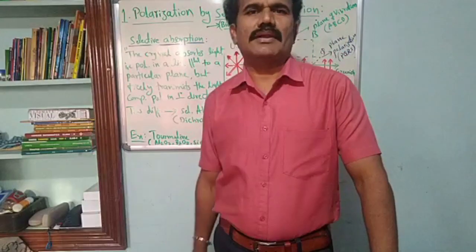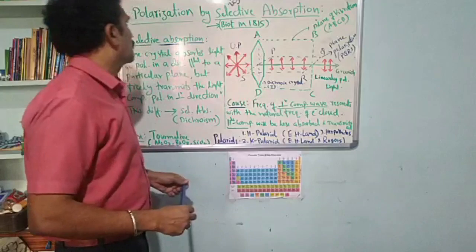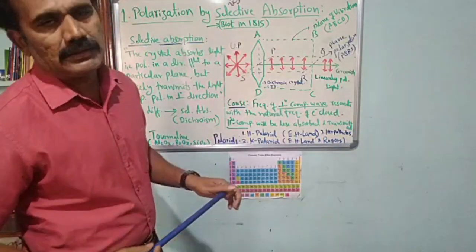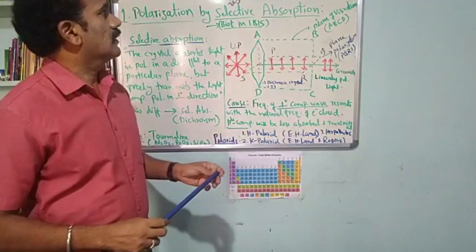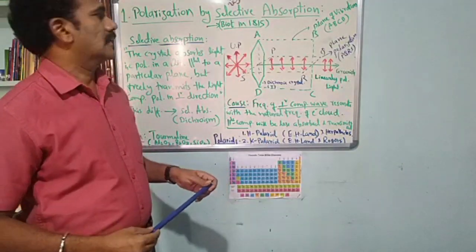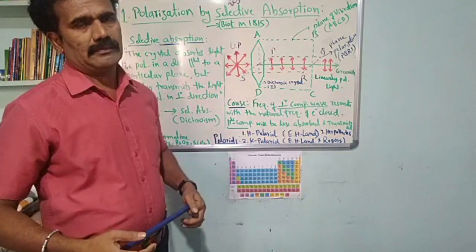Hi students, welcome back. In this video, let us understand the phenomenon called polarization by selective absorption. This mechanism of polarization by selective absorption was proposed by Biot in 1815.